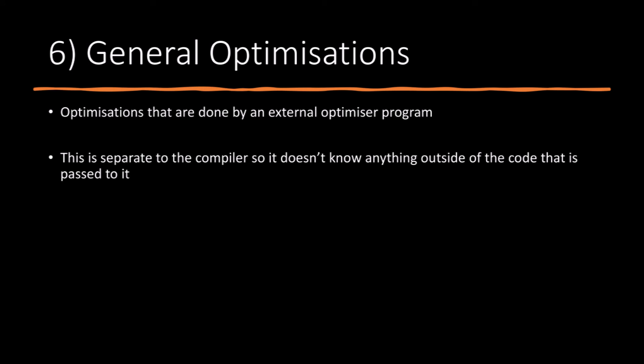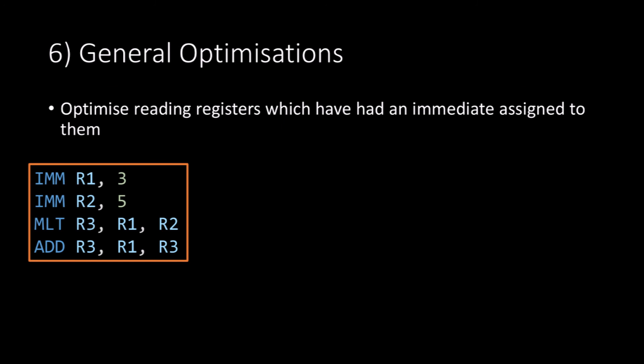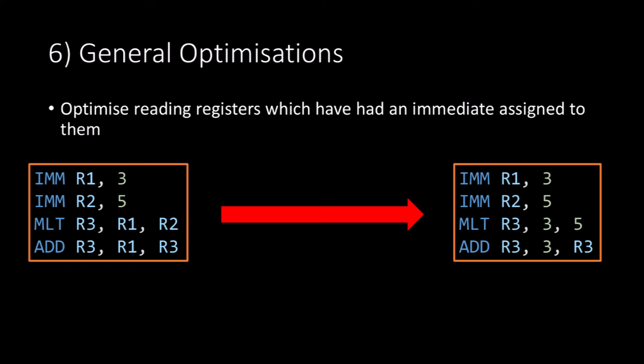Now we have the final step, which is the general optimizations. These are optimizations done by an external optimizer program. This program is separate to the compiler, so it doesn't know anything outside of the code passed to it. Looking back at our code, the first general optimization we can apply is reading registers which have had an immediate value assigned to them. This produces the code on the right, where we were once reading from registers 1 and 2, however we can replace that with the immediate values which would otherwise have been assigned to registers 1 and 2.